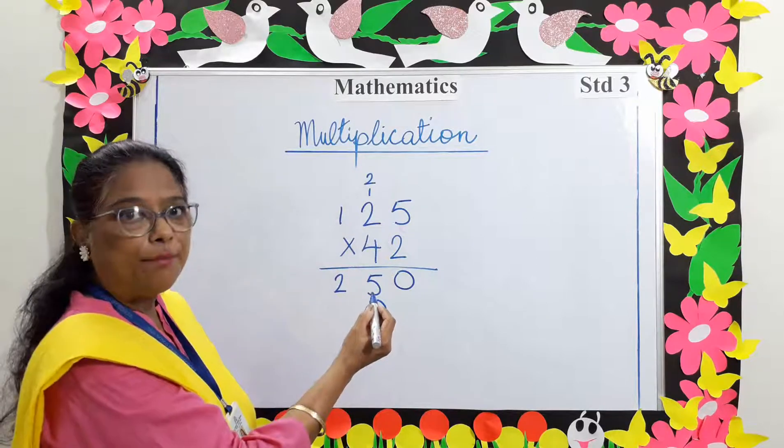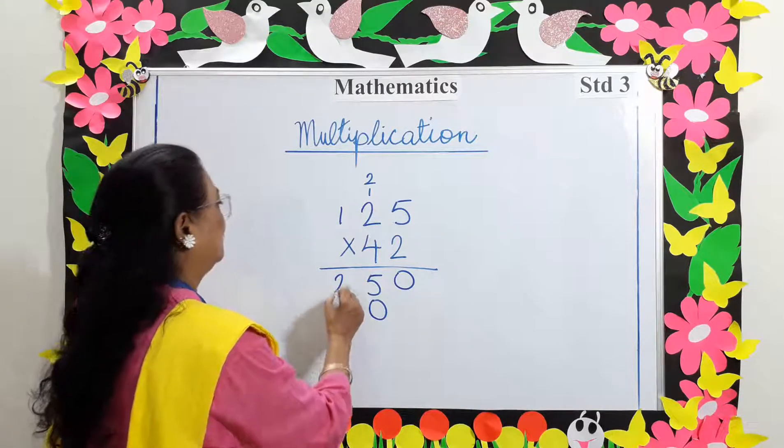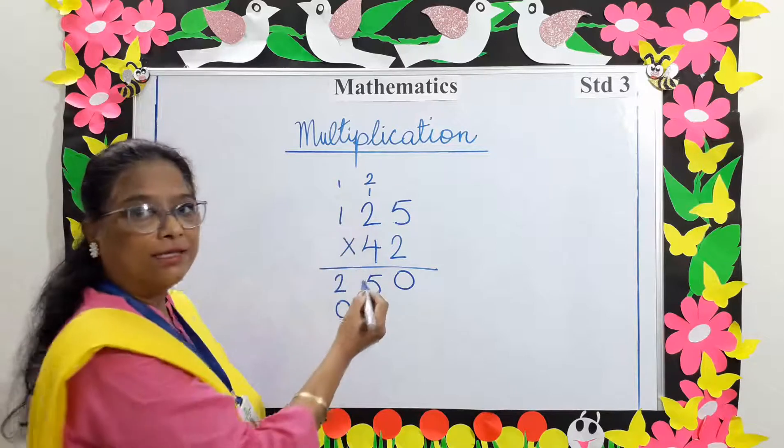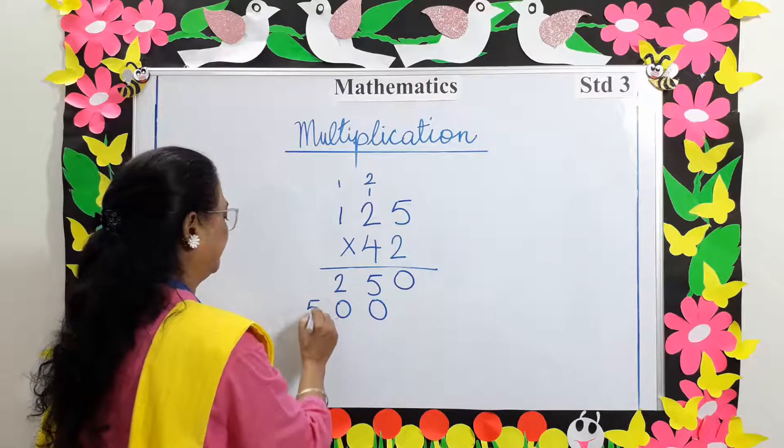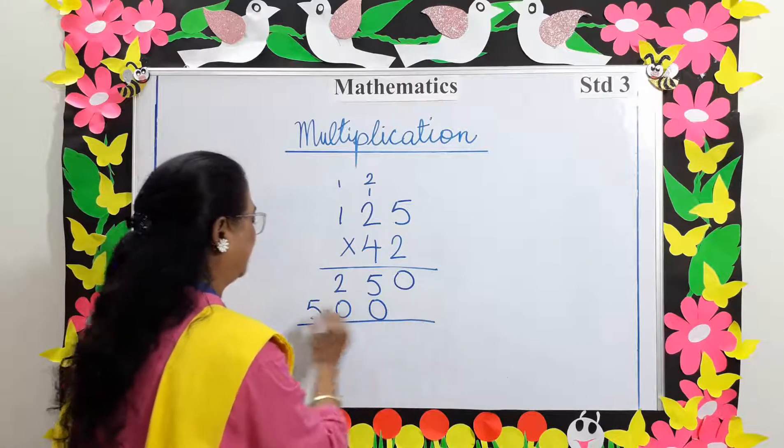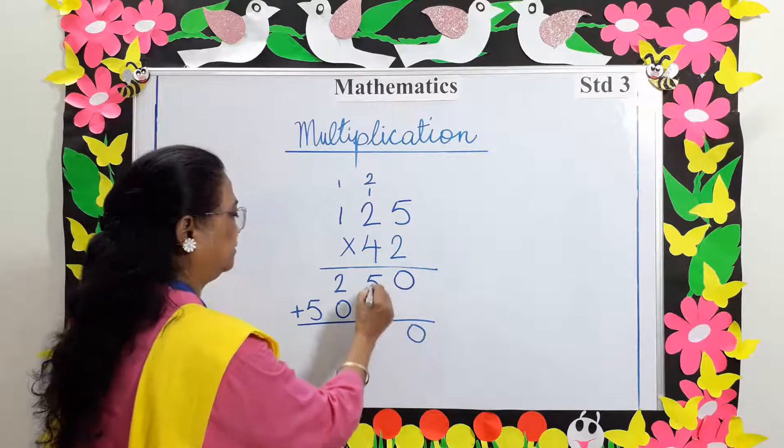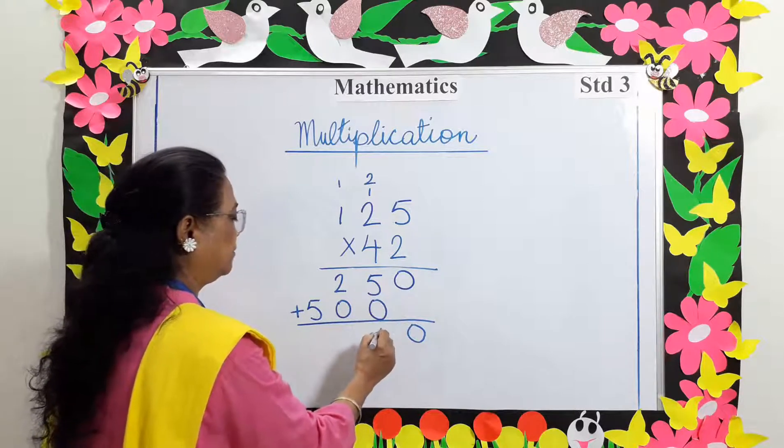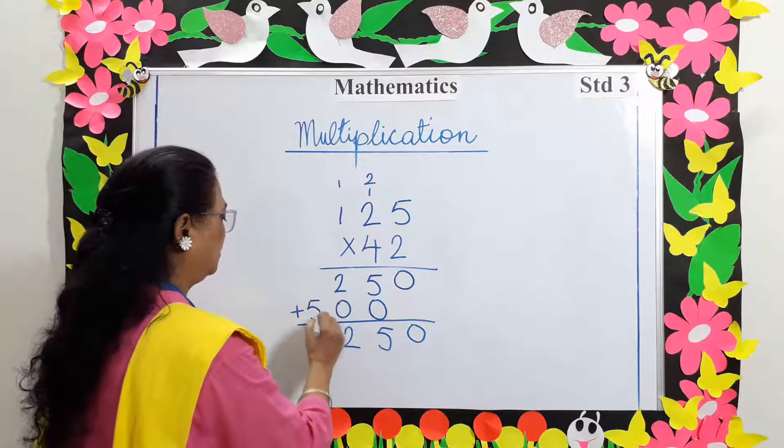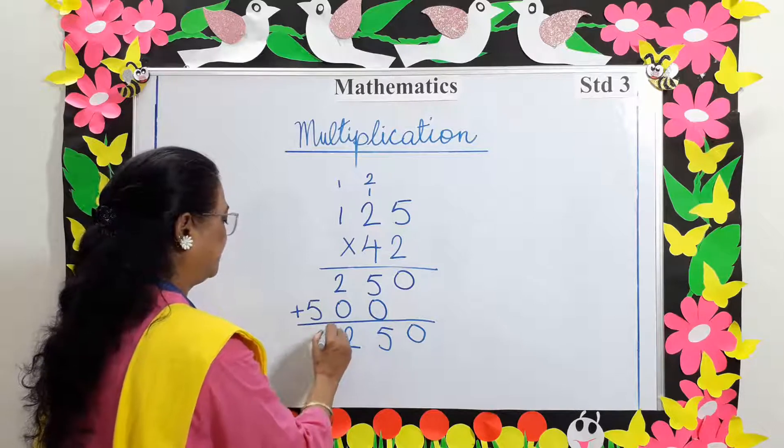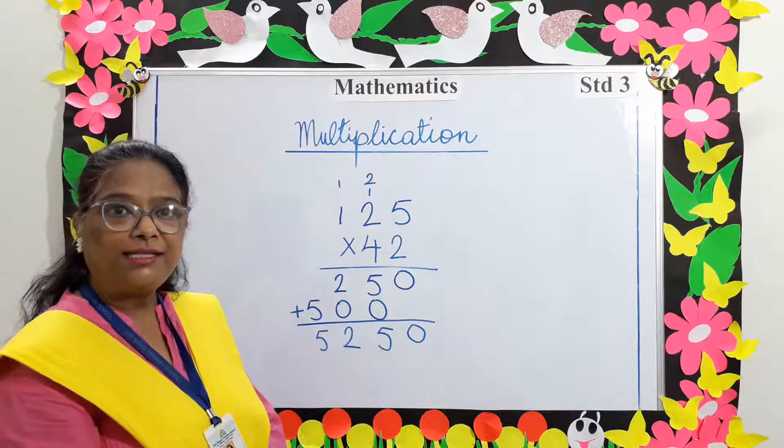4 twos are 8 plus 2 is 10, carry 1. 4 ones are 4 and 1 is 5. Now add the 2 numbers. Bring down the 0 here. 5 plus 0 is 5. 2 plus 0 is 2. Bring down the 5. 5250 is the product.